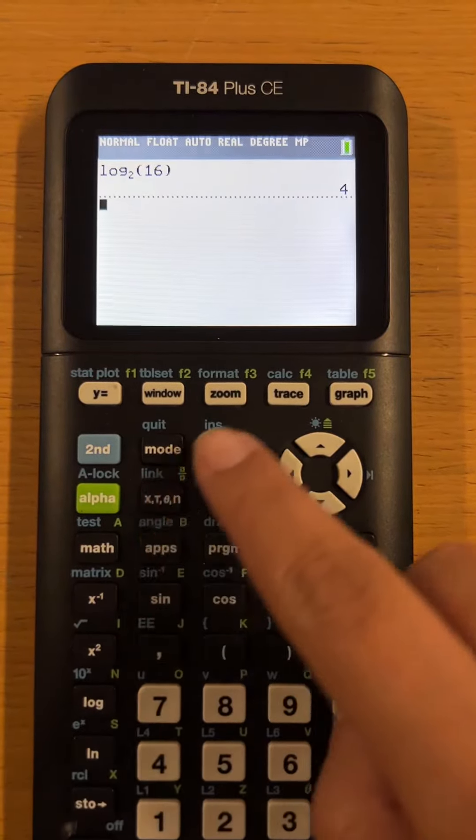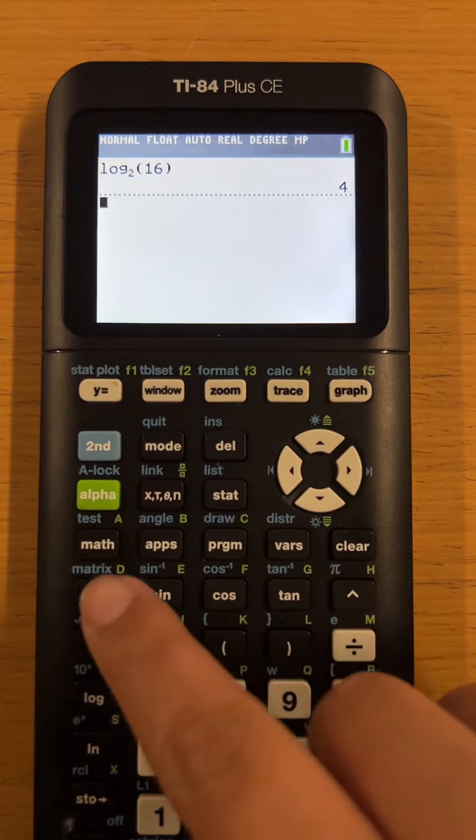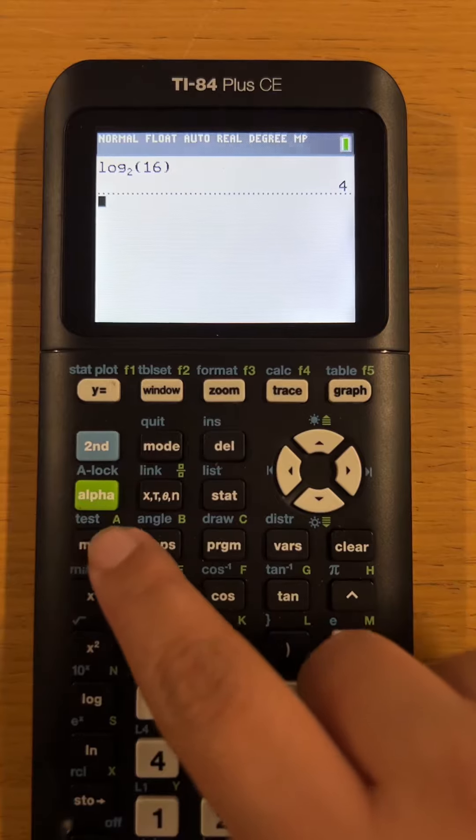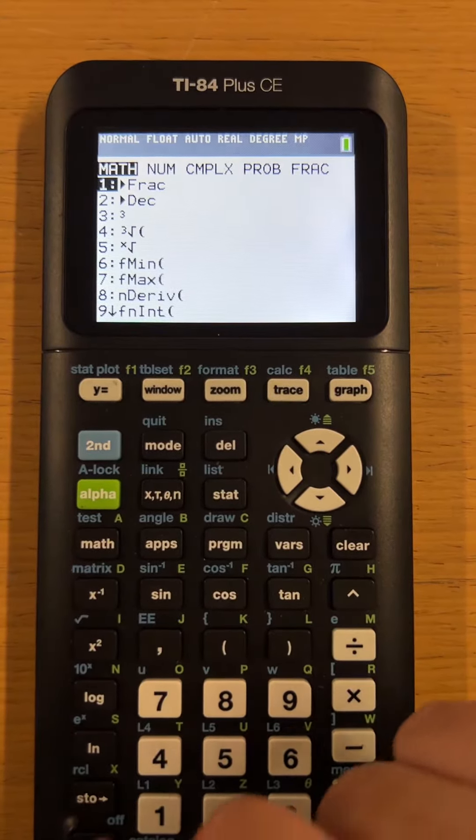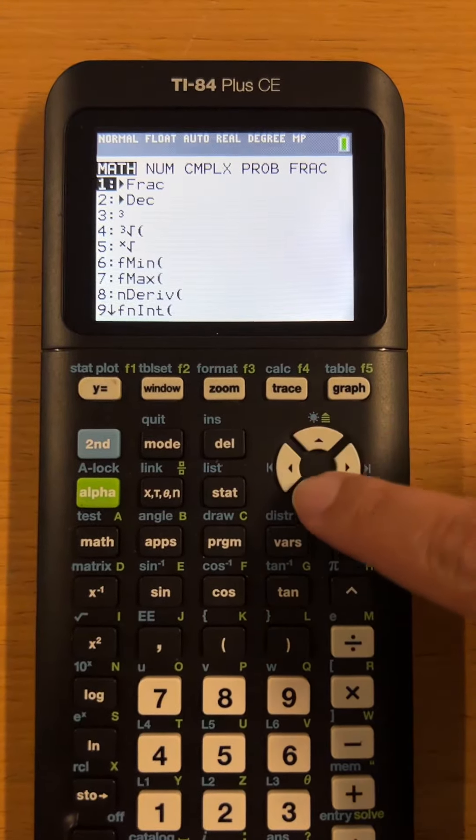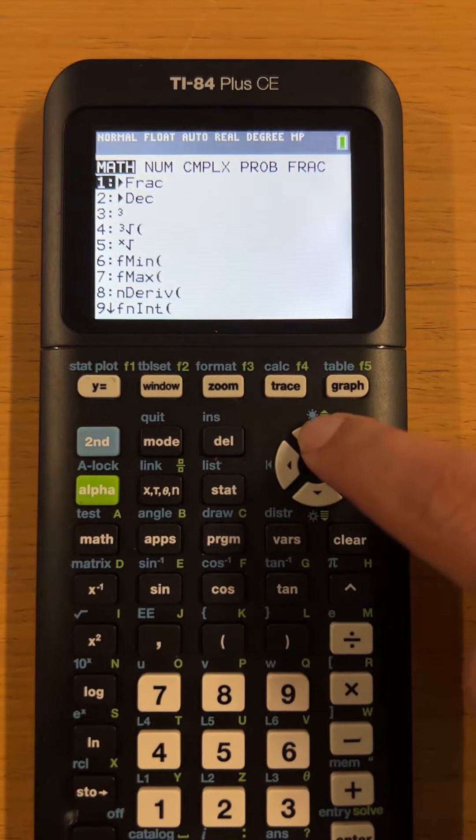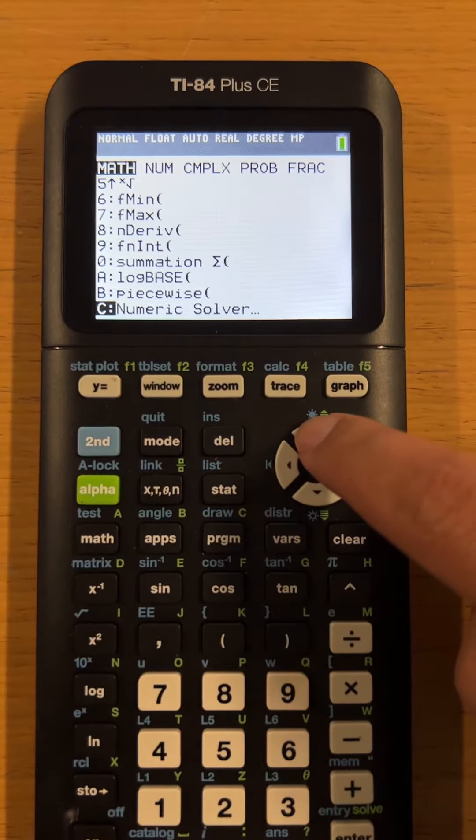The next method or the other method is you press math. It's either you go down or you go up. So I'm going to go up because it's closer.